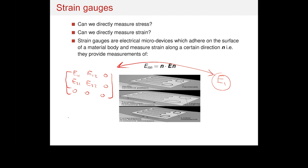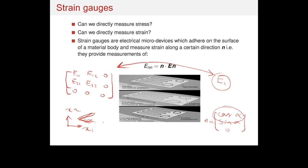To link E1 to the strain tensor, you project the strain tensor onto a specific coordinate system X1 and X2. You know the angle of the gauge direction — let's call it alpha — so you can find the normal direction N for the strain gauge. The normal direction N is: cos(alpha), sin(alpha), and 0 in the third direction, since the first component is along X1 and the second component is along X2. With the normal direction known, you multiply it from left and right with the strain tensor, and this should equal E1.